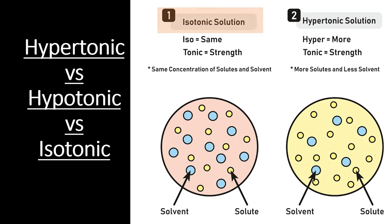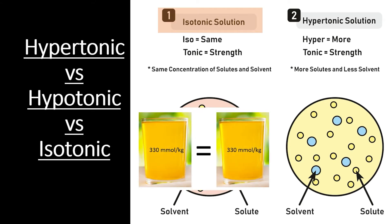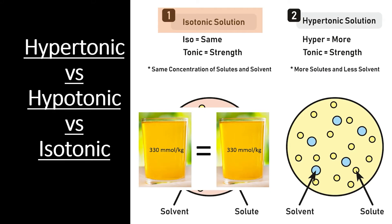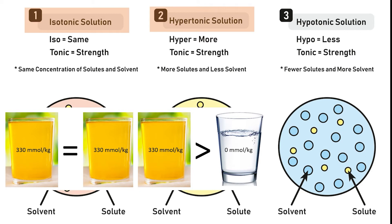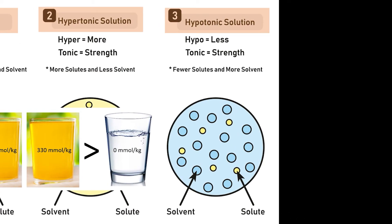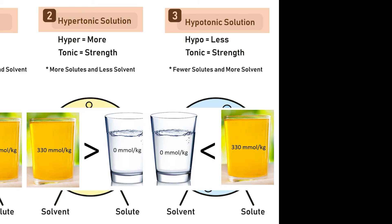A solution is described as isotonic to another solution if they have the same concentration of solutes diluted by the same amount of solvents — in other words, two solutions with the same osmolarity are considered isotonic to each other. For example, if you pour the sports drink into two glasses, each has an osmolarity of 330 millimoles per kilogram, so the two solutions are isotonic to each other. By contrast, a hypertonic solution has more dissolved solutes than the solution it is being compared to. For instance, the sports drink is hypertonic compared to pure water. Finally, a hypotonic solution is one that has fewer dissolved solutes than the solution it is being compared to. If we compare water to the sports drink, we would say that the water is hypotonic compared to the sports drink.